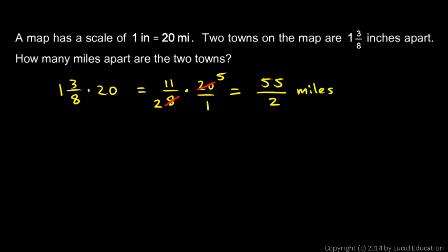But 55 over 2 will be easier to understand if we write it as a mixed number. So let's divide 55 by 2. 2 goes into 5 2 times. 2 times 2 is 4. Subtract, we get 1. Bring down the 5. 2 goes into 15 7 times. 7 times 2 is 14. We subtract and we get 1. So that's our remainder. And that remainder of 1 means 1 over 2, or 1 half. So 27 and 1 half miles is my answer.